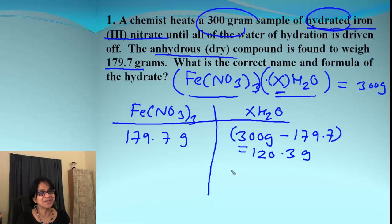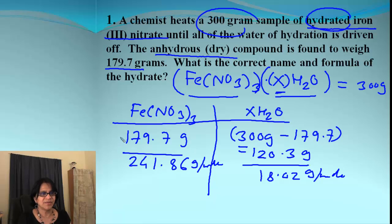Next step is grams to the moles. So we are going to go to the moles by dividing by the molar mass. And the molar mass for iron nitrate is 241.86 and this is 18.02. We can say grams per mole.